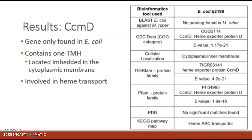An additional note here is that most ABC transporters are importers, bringing substrates into the cell. However, it is clear to see in all the domains and families here that the transporter involved with heme movement is an exporter. As we see here, basically every domain has 'heme exporter' in the name.